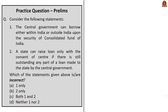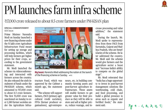Looking at the practice question: it is a two-statement question where you need to choose those statements which are incorrect. The first statement says the central government can borrow either within India or outside India upon the security of the Consolidated Fund of India. The second statement says a state can raise a loan only with the consent of the central government if there is still outstanding any part of a loan made to the state by the central government. Both statements are correct. But since the question asks for incorrect statements, the correct answer is option D — neither one nor two. Always read the question carefully, two or three times, to know whether it demands correct or incorrect statements.